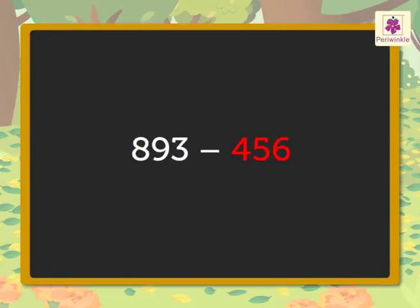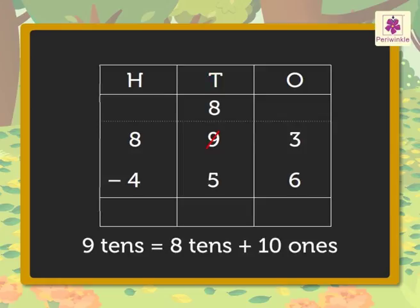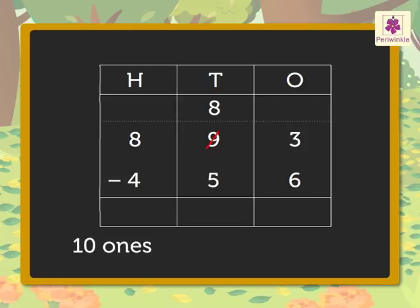Here, we have to subtract four hundred fifty-six from eight hundred ninety-three to find out the number of green leaves. Subtract the ones, that is three minus six. As three is smaller than six, we regroup the nine tens as eight tens plus ten ones. Now, we have ten plus three is equal to thirteen ones. Therefore, thirteen minus six is equal to seven ones.